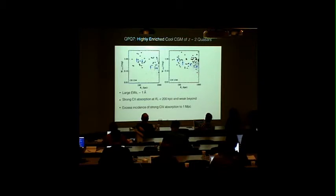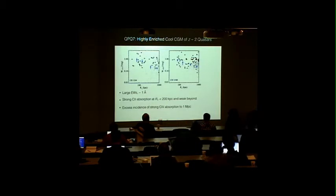Now, come to QPQ7. This is a plot of carbon-2-1334 equivalent width versus R-perp. And this is a plot of carbon-4-1548 versus R-perp. The black squares mark three sigma detections. The open squares are non-detections at their two sigma values. And the blue symbols are average equivalent widths in bins of R-perp. Both the 1334 and 1548 transitions show large equivalent widths typically at one angstrom. For carbon-2, we found strong absorptions at R-perp less than 200 kiloparsec, beyond which the absorption is weaker. And for carbon-4, we see excess absorption up to one megaparsec. Both distributions anti-correlate with R-perp. And carbon-2's evolution with R-perp is stronger than carbon-4's evolution with R-perp.